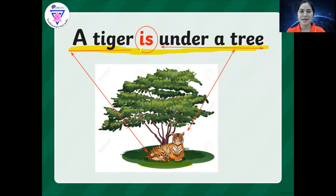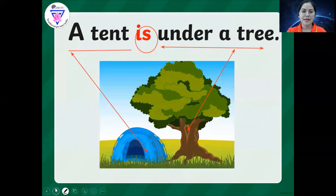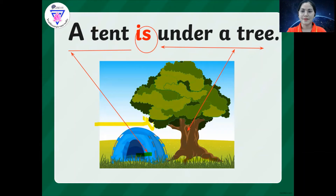So that is the sight word is. Do you understand? So now let's move forward. We also have here a tent is under a tree. So this is the tent, this is the tree here, and this is under here — this part. So a tent is under a tree. Very good.